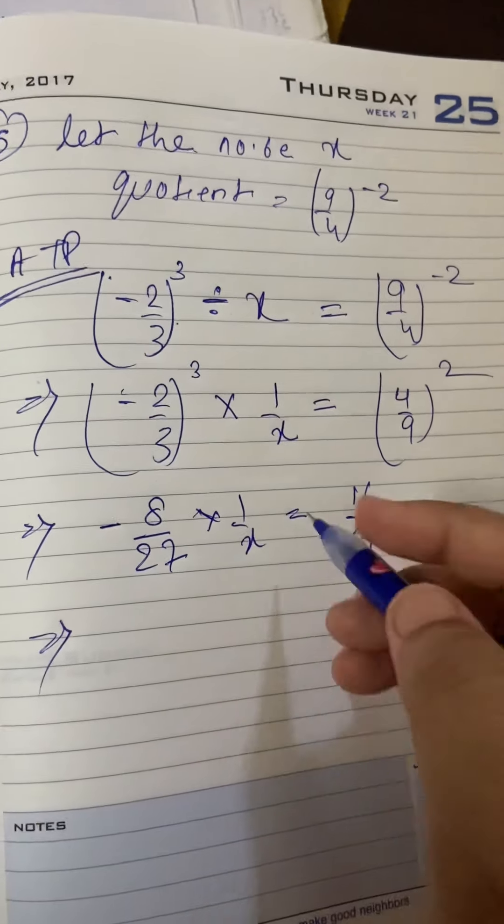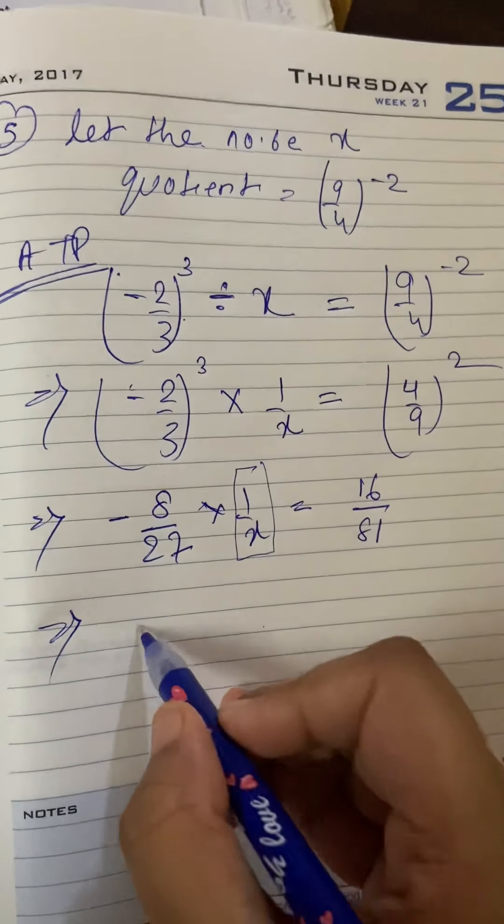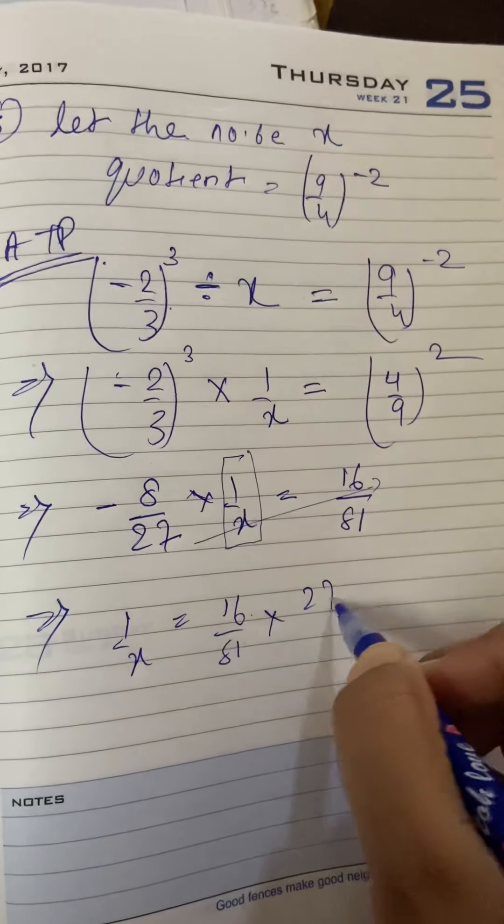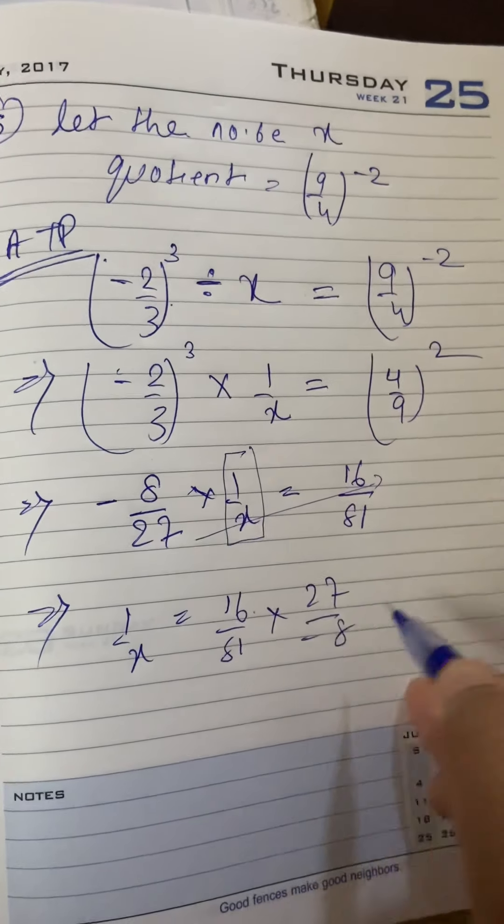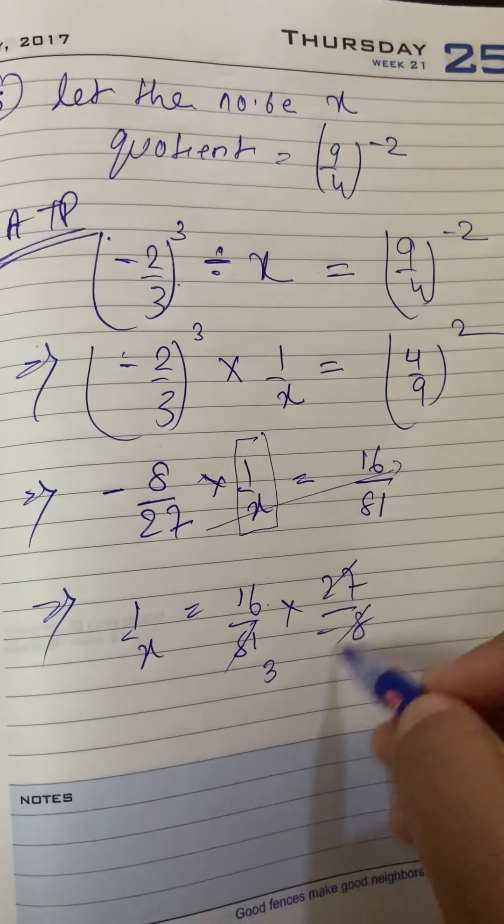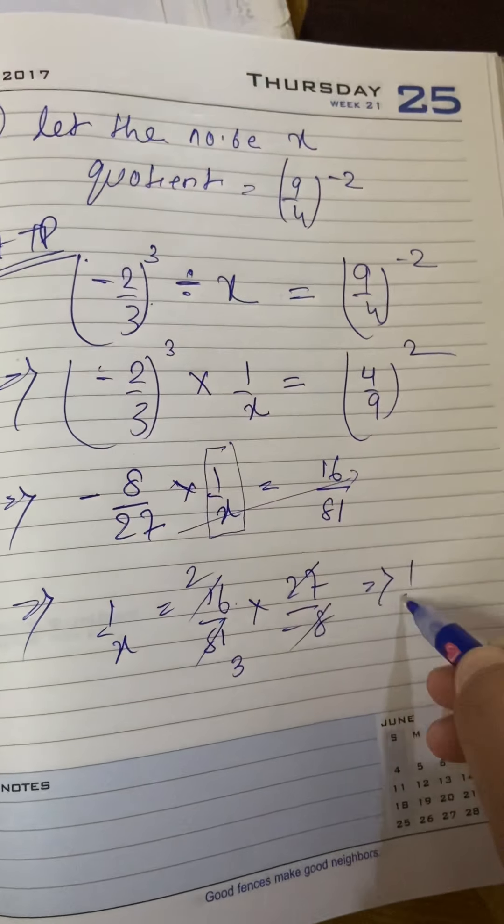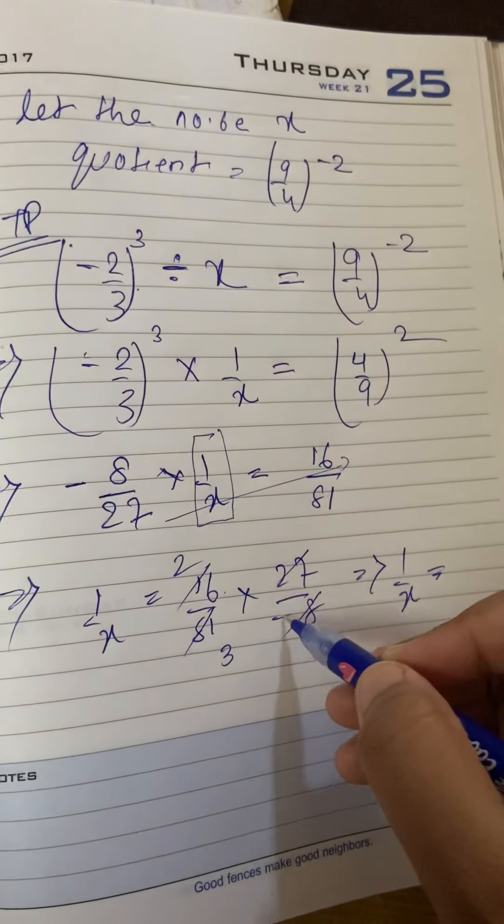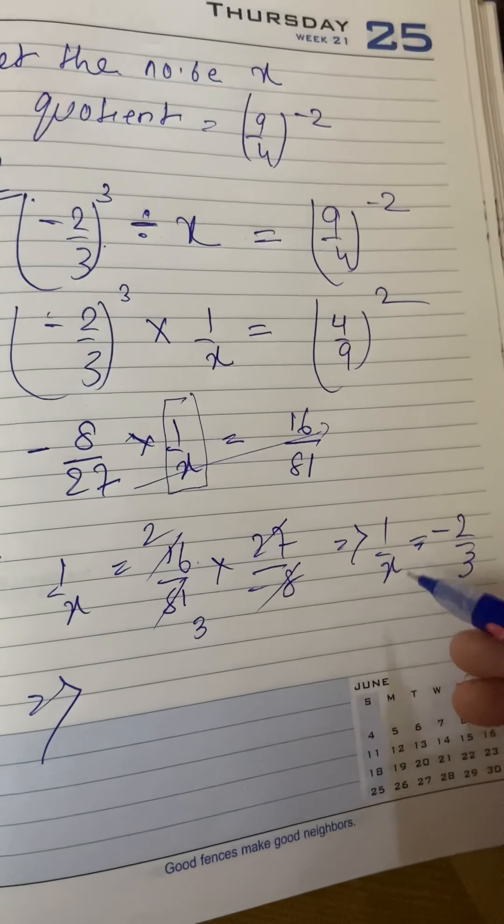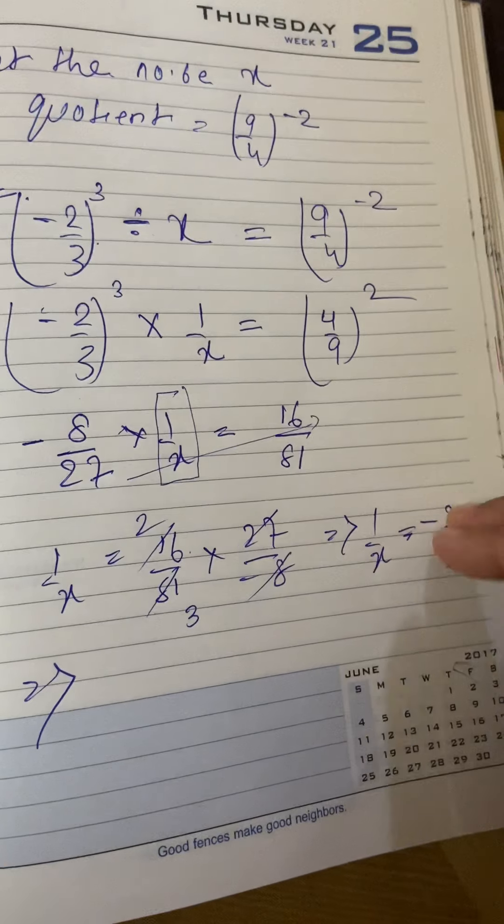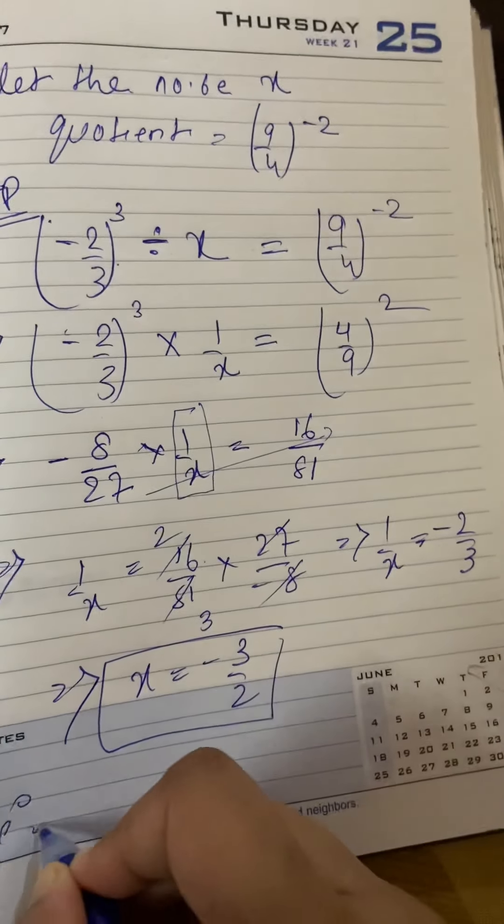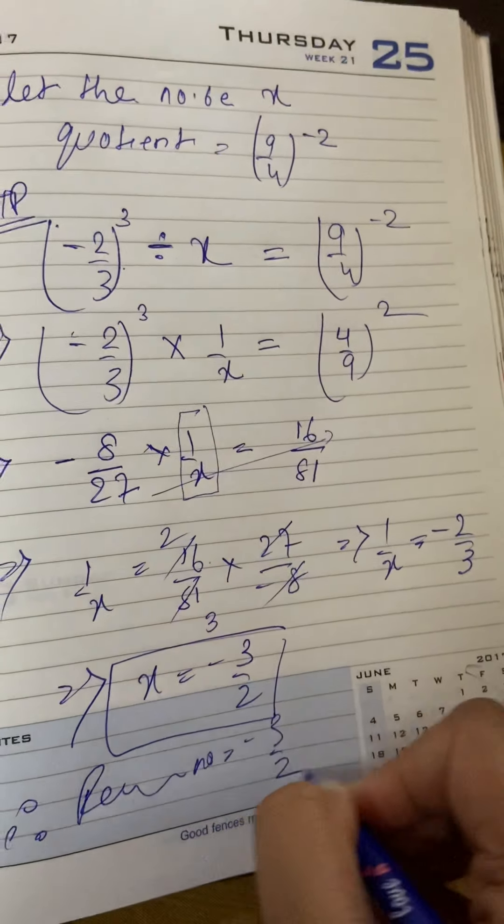Ab haom luggo kya saamne rha ki 1 by x to idhaar hi rakhenghe. To, 1 by x to rahega. 27 upar chala jayega. Or minus 8 niche a jayega. 27 se isko directly cut kar saktetenghe 3 pe. Or isko directly cut kar saktetenghe 2 pe. 1 by x keitna aya? Yhe minus bhi hai. To, 1 by x aya minus 2 by 3. Lekin haom luggo ko to x chahi hai. To, yaha reciprocal karenghe. X equals to minus 3 by 2. A gaya therefore, required number equals to minus 3 by 2.